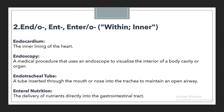Next is endotracheal tube, which means a tube inserted through the mouth or nose into the trachea to maintain an open airway. When a patient requires this, a tube is inserted into the interior of the body, which is why we use the terminology endotracheal tube with the prefix ENDO.